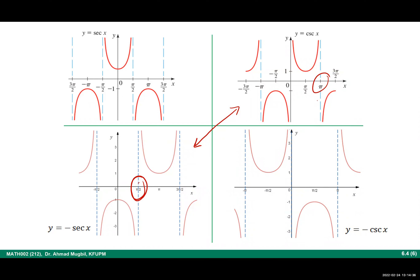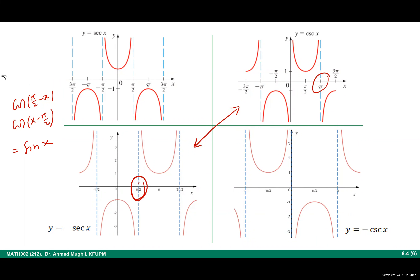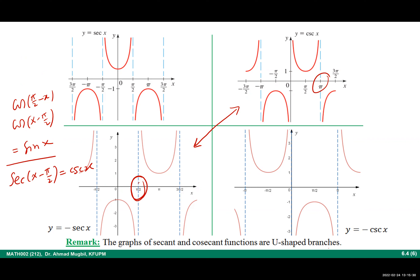Secant and cosecant can be obtained from each other by shifting. Just as cosine(x − π/2) = sine(x), we have secant(x − π/2) = cosecant(x). If you shift the graph of secant by π/2 to the right, you get cosecant. They are not exactly the same because their vertical asymptotes differ, but they are related through a horizontal shift. Both consist of U-shaped branches, so be careful when distinguishing them.